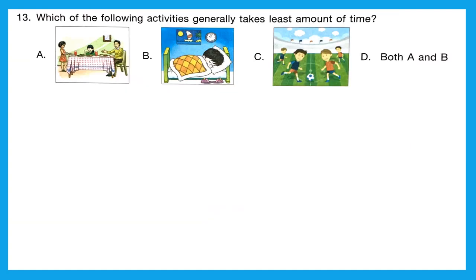Question 13: 'Which of the following activities generally takes the least amount of time?' Least means minimum. A is having a meal, B is sleeping, C is playing, D is both A and B. We generally sleep for around 8 hours, play for 1 to 2 hours, but eating a meal takes only about 10 to 20 minutes. So we take the least amount of time eating. Right option is A.